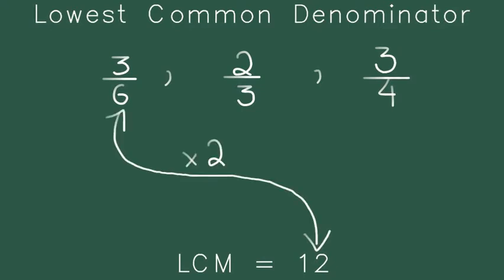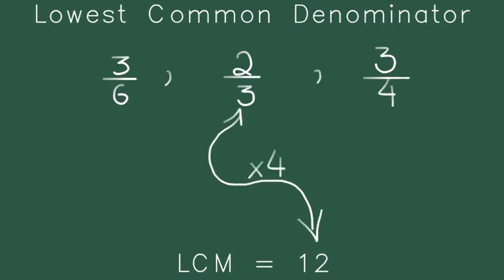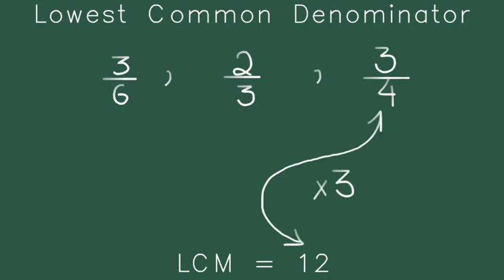Now the main thing is we have to make all of the denominators equal to 12. Now how do you make the first one equal to 12? How do you make 6 equal to 12? You multiply it with 2. On the next hand side we have 3. How do you make 3 equal to 12? You multiply it with 4. And how do you make 4 equal to 12? You multiply it with 3. Now this is how you're actually going to make all of them equal in a way that you can actually do something with them.